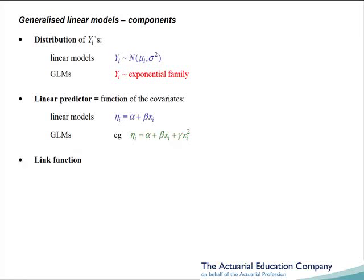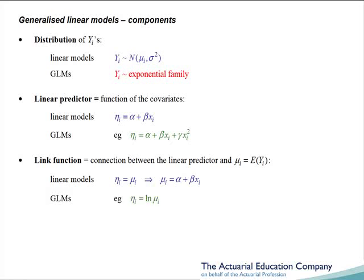Finally, we need what's called the link function. This is how we link our linear predictor, our covariates, back to the mean of our distribution, say our claim amounts. For linear models, we saw that the mean was simply equal to our linear predictor, i.e., it was equal to alpha plus beta xi. For generalized linear models, we can have a variety of link functions. For example, we might have log of the mean. In which case, using the linear predictor above, our mean would equal the exponential of alpha plus beta xi plus gamma xi squared.